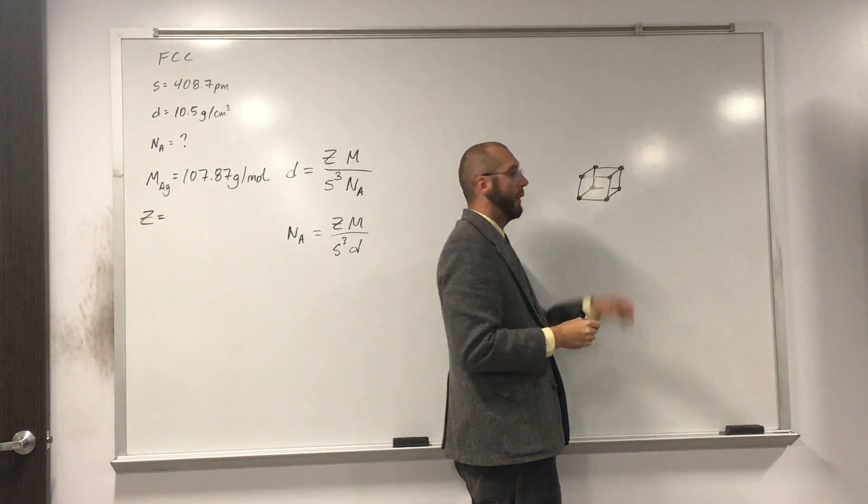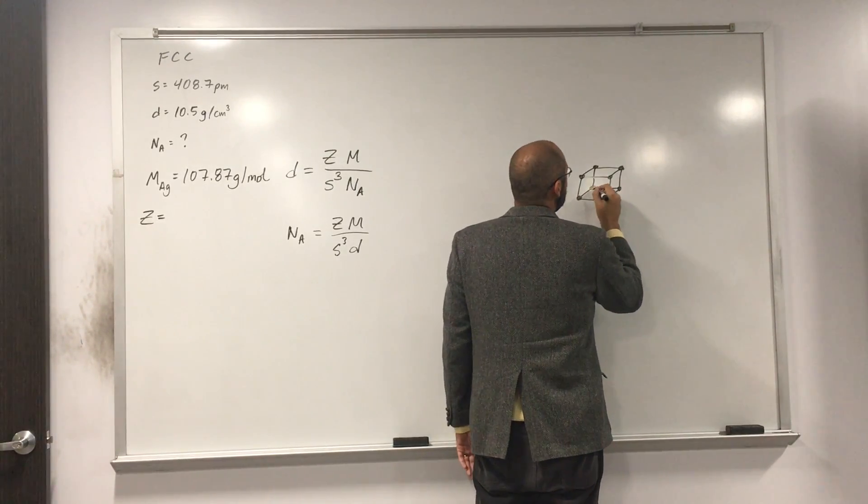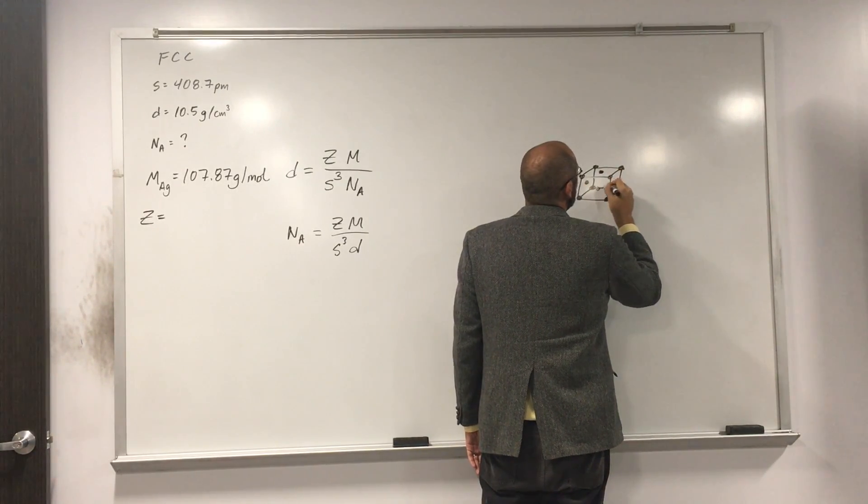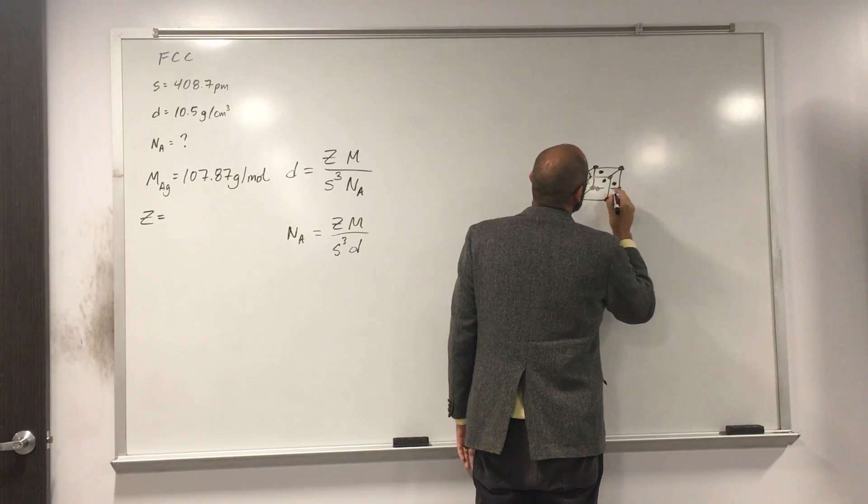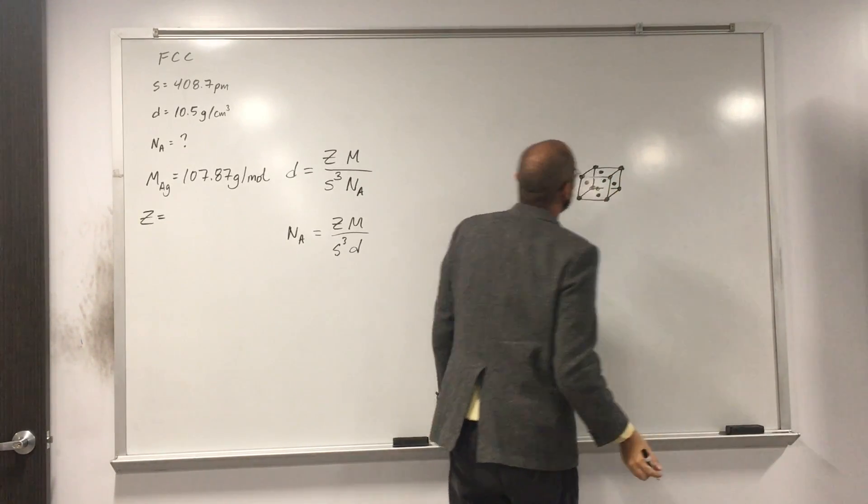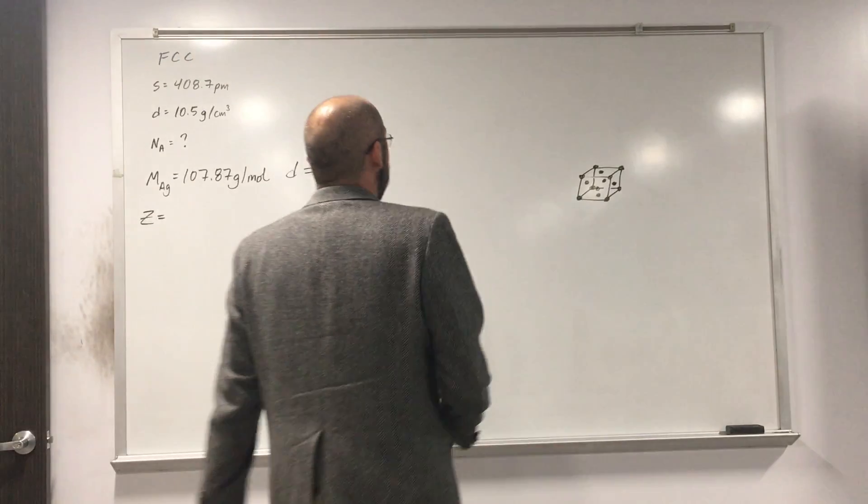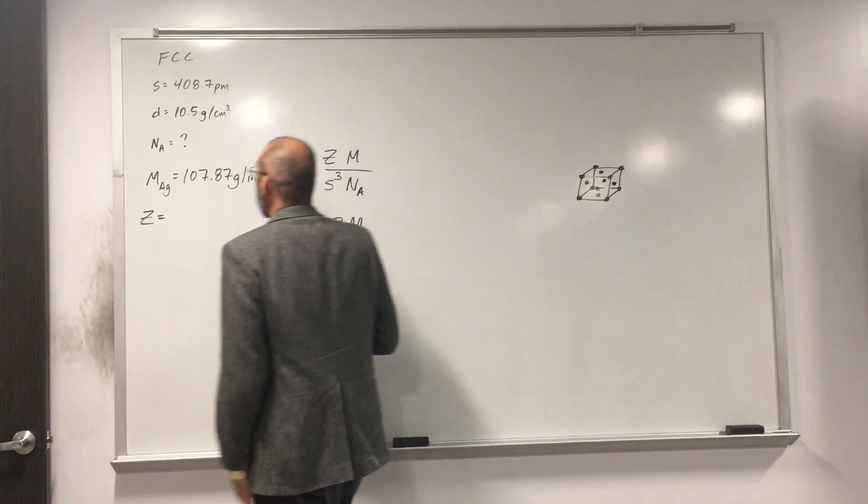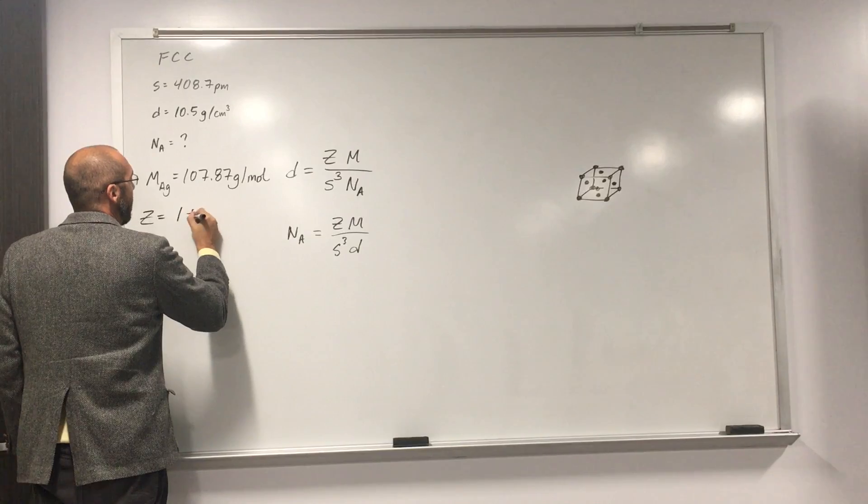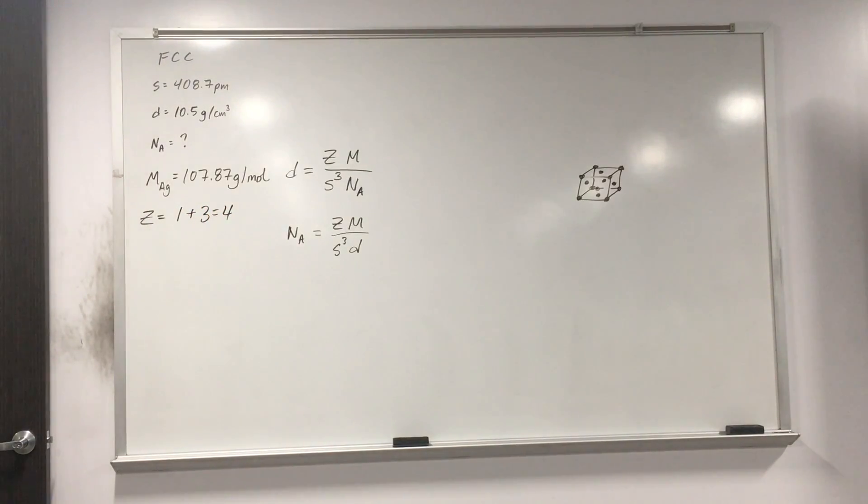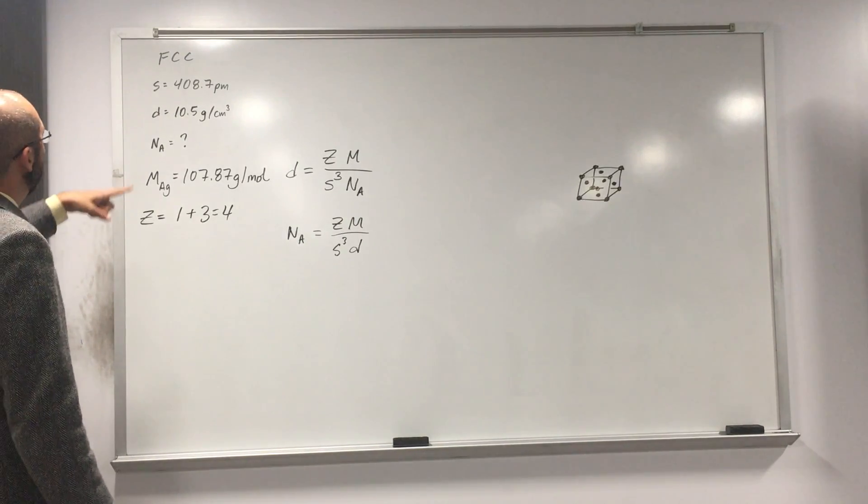So one eighth of eight, right? And then the face is one, two, three, four, five, six, and half of six is three, right? So Z, what did we say? One plus three equals four. Is everybody okay with that? No problem. So I think we have everything now.